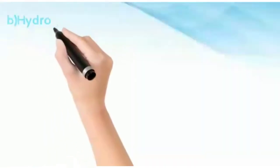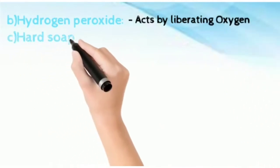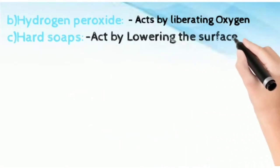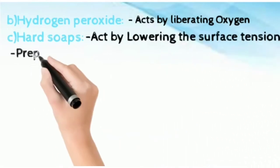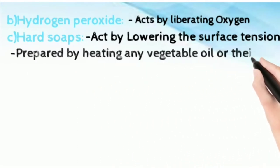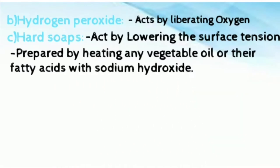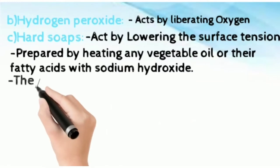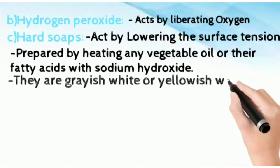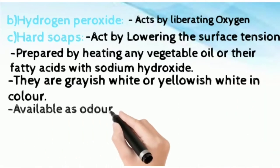Hydrogen peroxide acts by liberating oxygen. Hard soaps act by lowering surface tension. These are prepared by heating any vegetable oil or fatty acids with sodium hydroxide. They are grayish white or yellowish white in color, available as odorless solid or powder. They are partially soluble in water and completely soluble in alcohol.